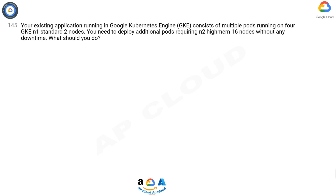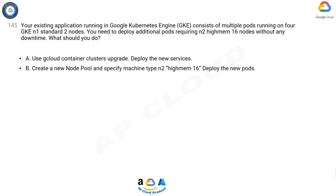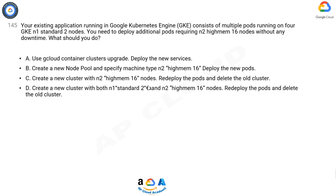Question 145. Your existing application running in Google Kubernetes Engine (GKE) consists of multiple pods running on four GKE n1-standard-2 nodes. You need to deploy additional pods requiring n2-highmem-16 nodes without any downtime. What should you do? Option A: Use Cloud Container clusters upgrade and deploy the new services. Option B: Create a new node pool and specify machine type n2-highmem-16, then deploy the new pods.